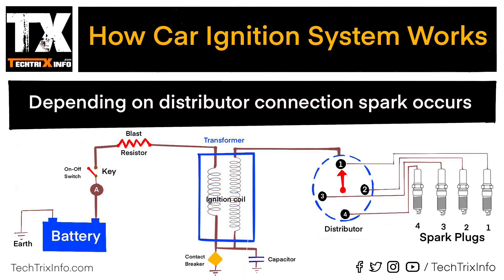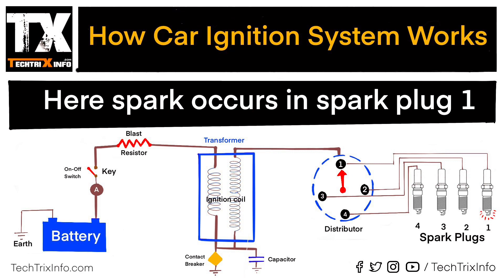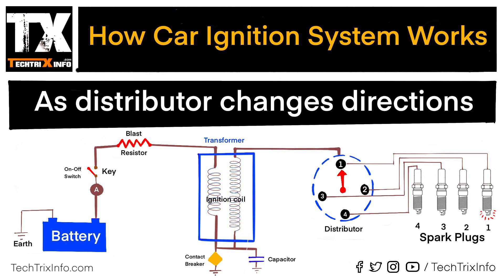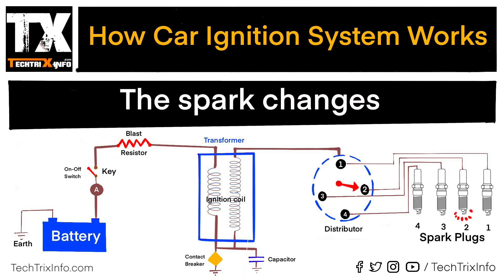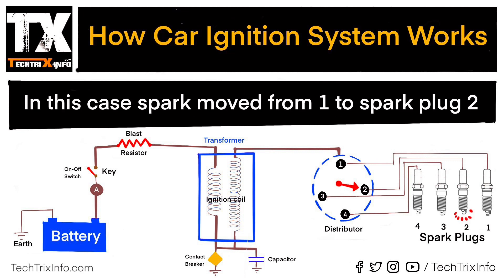The spark occurs here — spark occurs in spark plug number one. As the distributor changes its direction, you can see it change the direction from one to two, and the spark changes accordingly.